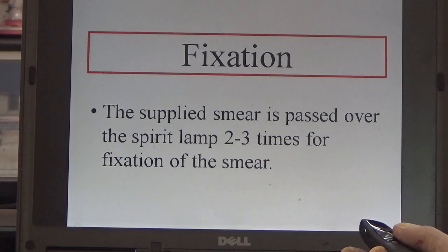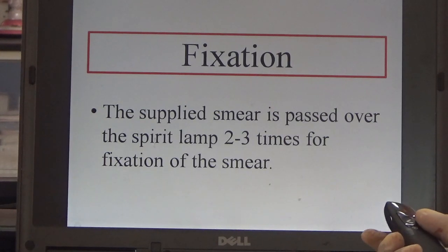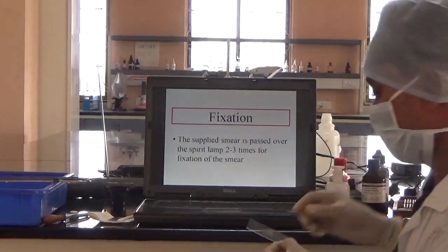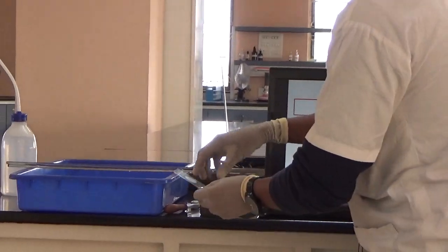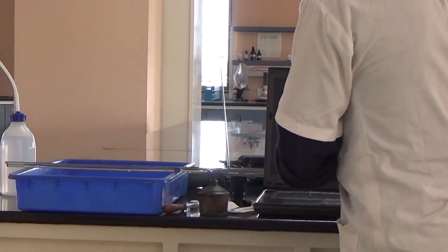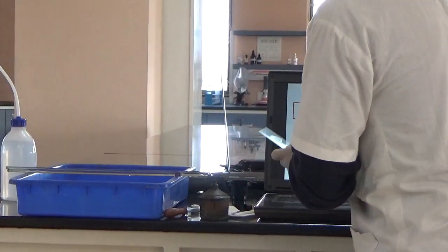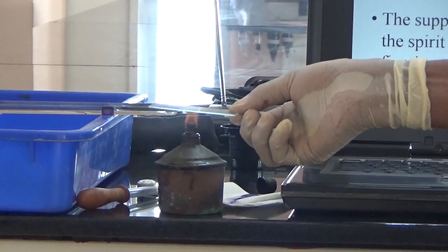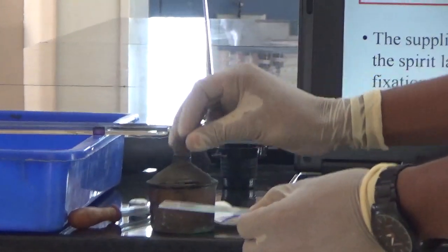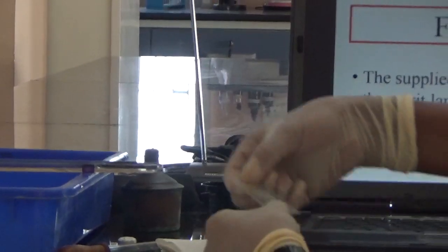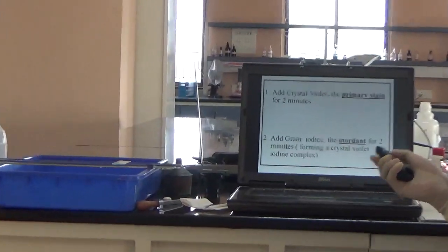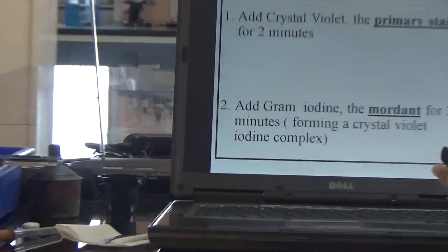At first, fixation: the prepared smear is passed over the spirit lamp 2 to 3 times to fix the smear. Then add crystal violet, which acts as the primary stain, and wait for 2 minutes.